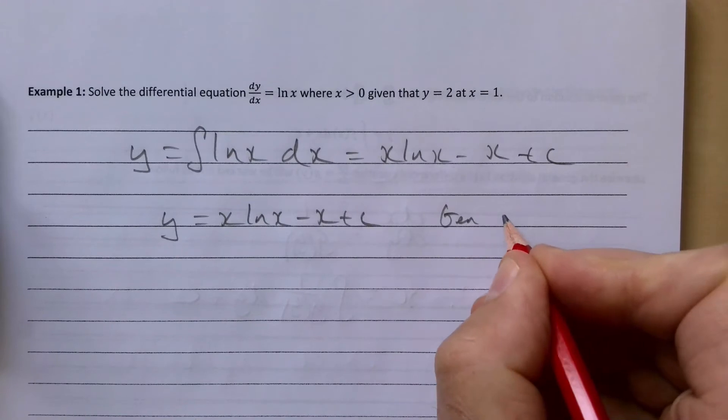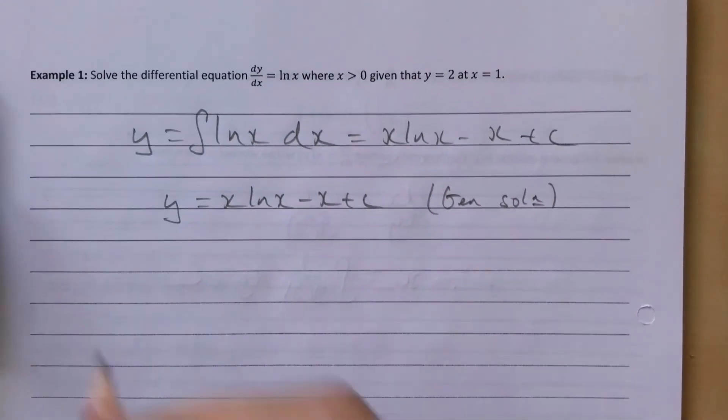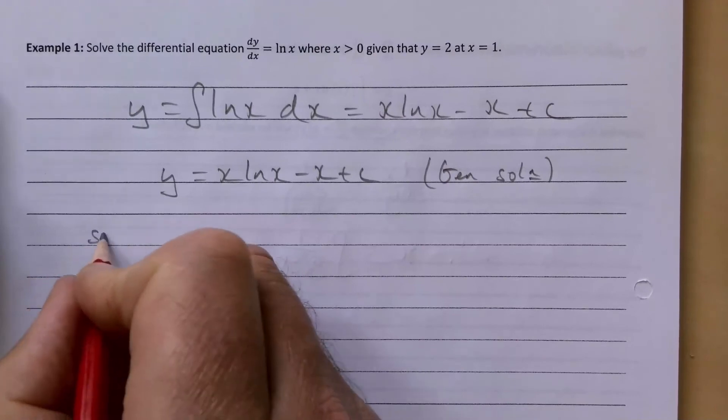So we have y = x·ln(x) - x + c. That is our general solution because we still have the c in there. To find our particular solution, we are going to substitute